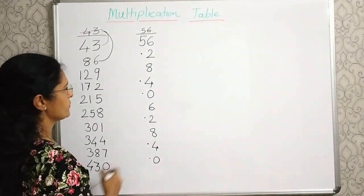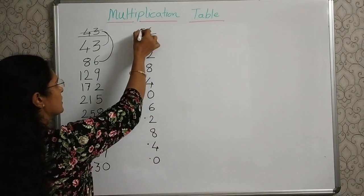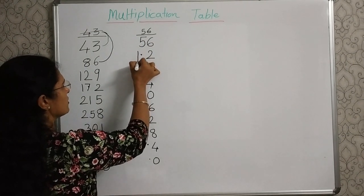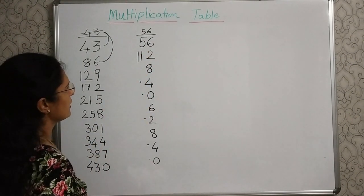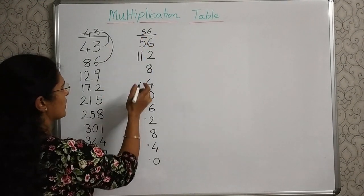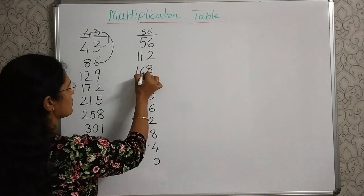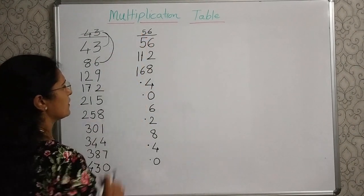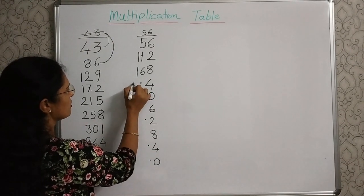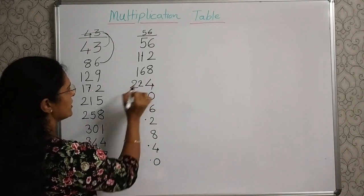Now, we will add tens digit. 5 plus 5, 10. And this carryover, 11. So, right here, 1 and 1, 11. Next, 11 plus 5, 16. 16 plus 5, 21 plus carryover. So, it will be 22.